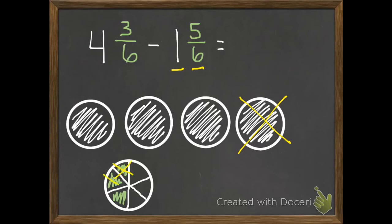So I can subtract 3, but then I need some more. So I'm going to divide up this other hole into 6 more sixths. So I subtracted 3, I need to subtract 5. So 3, 4, 5.